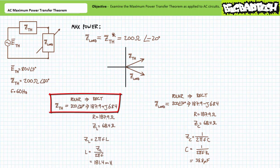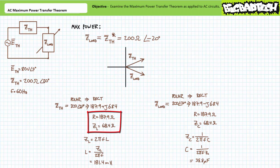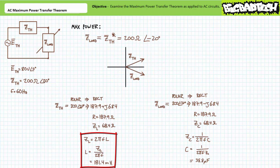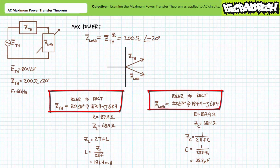Similarly, the Thevenin's equivalent impedance Z_TH at 200 ohms at an angle of positive 20 expressed using polar format has a value of 187.9 plus j68.4 when expressed using rectangular format. Given the positive imaginary reactive component, Z_TH is most likely a 187.9-ohm resistor in series with an inductor that presents an impedance magnitude of 68.4 ohms at 60 hertz. An algebraic rearrangement of the inductive complex impedance formula solving for inductance suggests the inductor has a value of 181.4 millihenries. It should be obvious that the equal and opposite reactive portions effectively cancel each other out.